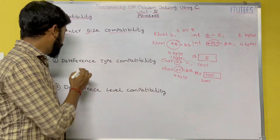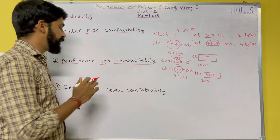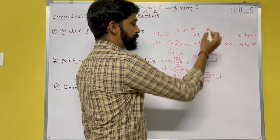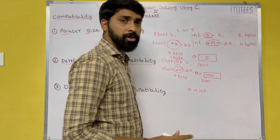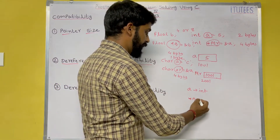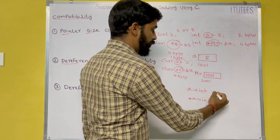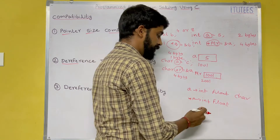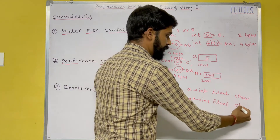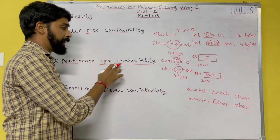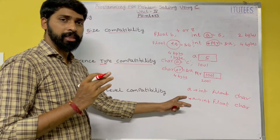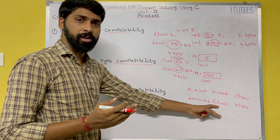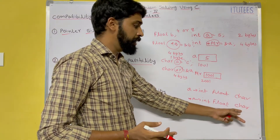Coming to the next one: dereference type compatibility. Dereference type compatibility means — for example, if variable a is an int, then the pointer to store the address of a must also be declared as int. If a is float then the pointer is also float. If a is char then the data type of the pointer is also char. So if the variable is integer then the pointer variable is also integer; if the variable is float then the pointer variable is also float.